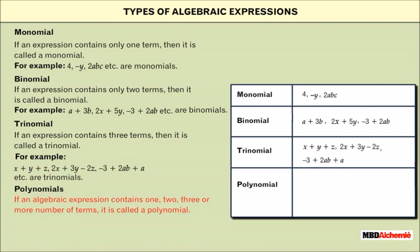Polynomials: If an algebraic expression contains one, two, three, or more number of terms, it is called a polynomial. For example, x plus 3y minus 8z minus 4xy is a polynomial.